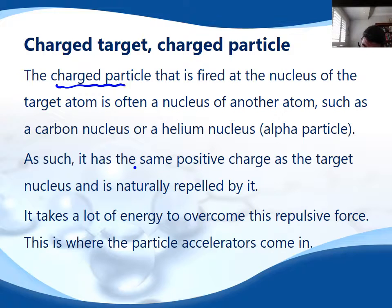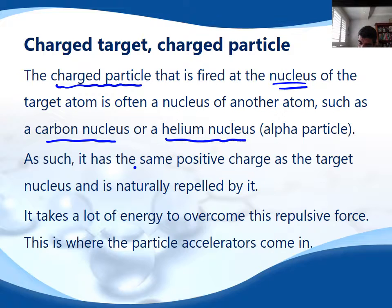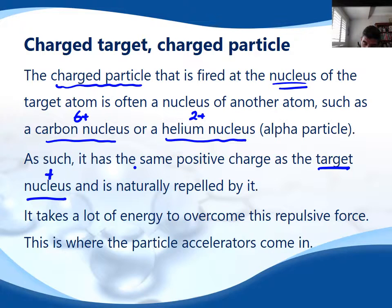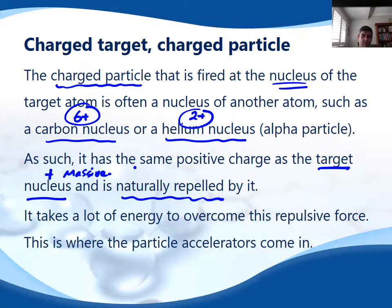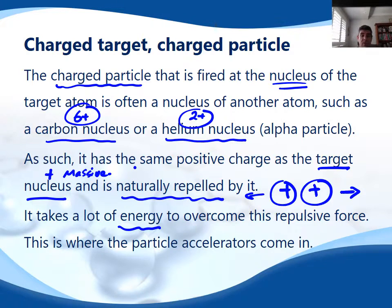The important thing is we want to fire a charged particle — like the nucleus of a helium atom or a carbon atom — at the nucleus of a target atom. The problem is that these particles, being nuclei, have a positive charge and a reasonable mass. The target nucleus also has a positive charge and is very massive compared to something like a helium or carbon nucleus, so the natural tendency is for the nucleus to repel the incoming particle.